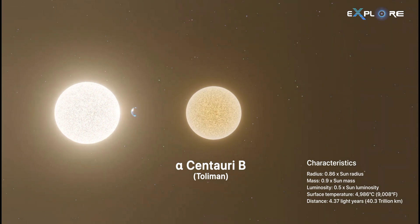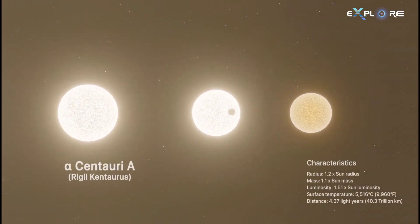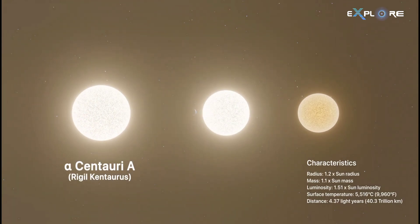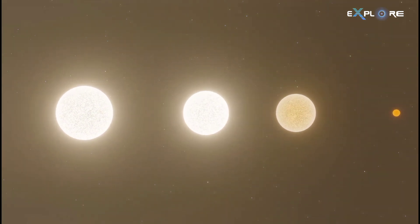Alpha Centauri A, slightly more massive and brighter, radiates with a yellow hue. They're about 5 billion years old, a bit older than our sun. These similarities make us curious about whether they could host life.